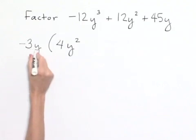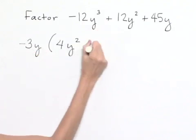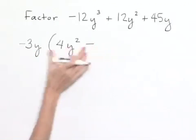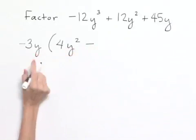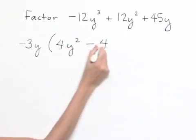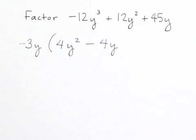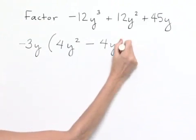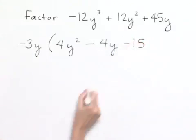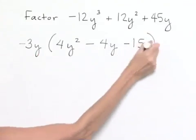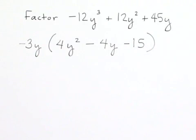Because we're factoring out a negative, we're going to need a negative sign between the next two terms to end up with a positive when we multiply through. 3 times 4 gives us 12, and y times y gives us y squared. Factoring out a negative 3 from our last term gives us a negative 15. And when we factor out the y, we're not left with a y value. So this ends up being the first step in our factorization.